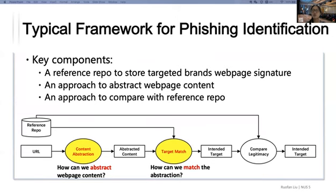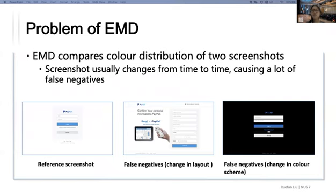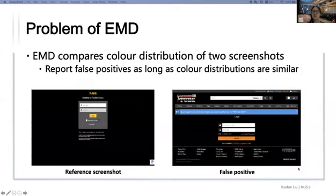There are two key research questions here. First, how can we abstract webpage content to better represent the webpage? Second, how can we match the abstraction? In AMD, the basic idea is that since the phishing site usually fakes the image site, the color distribution of a phishing screenshot should be similar to that of the targeted brand. The content abstraction module processes webpage screenshots into a vector describing the color distribution, and the target matching module compares the test vector to all vectors in the reference repo. We argue that AMD has two problems: first, it is not robust to small perturbations in color design or layout; and second, AMD introduces false positives when two screenshots have similar color distributions.